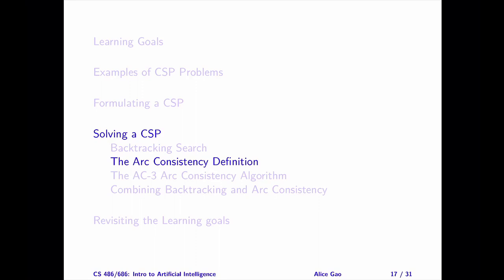That's everything on the arc consistency definition. Let me summarize. After watching this video, you should be able to do the following. Explain the idea of arc consistency at a high level. Explain why it is sufficient to consider binary constraints only. Describe the notation for an arc. Describe the arc consistency definition. Verify whether a given arc is consistent. Explain how the arc consistency definition can be helpful for solving a CSP. Thank you very much for watching. I will see you in the next video. Bye for now.